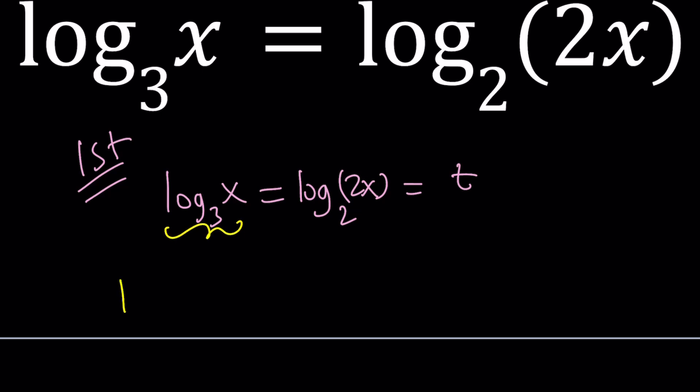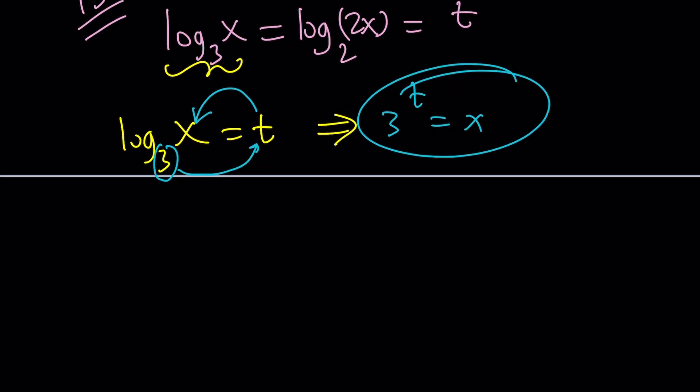This is t. So I get log x with base 3 equals t. By using definition, this is the base, that is the exponent, and this is the result. That's how logs work. So that means 3 to the power t equals x. Let's do the same thing with the other equation. Log 2x equals t. This is the base, that's the exponent, and I have to come back for the answer. Start at the base, go across, and come back for the answer. So 2 to the power t equals 2x.